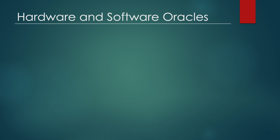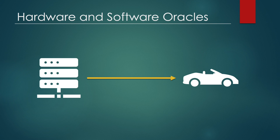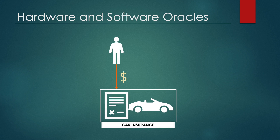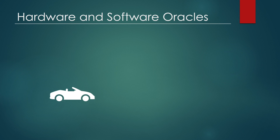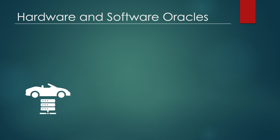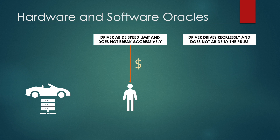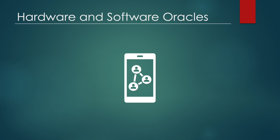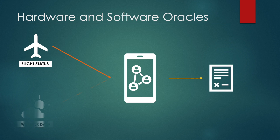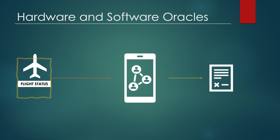We have hardware and software oracles, with hardware oracles being typically sensors integrated within tangible physical objects. For instance, in a smart contract insurance where drivers pay a premium in the hope of being rewarded for good behavior on the road, the insurance company installs a physical braking sensor in the client's vehicle. Drivers who abide by the speed limit and do not brake aggressively will receive their entire premium back, while drivers guilty of speeding and braking recklessly will lose their entire premium. Software oracles are the most common form, pulling data from third-party sources such as web APIs, including real-world information such as flight status and weather data.